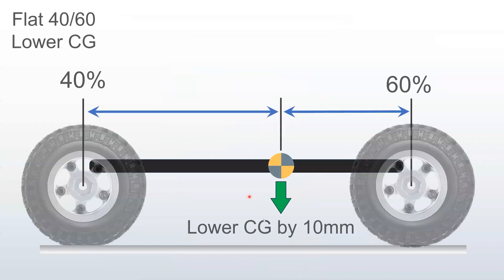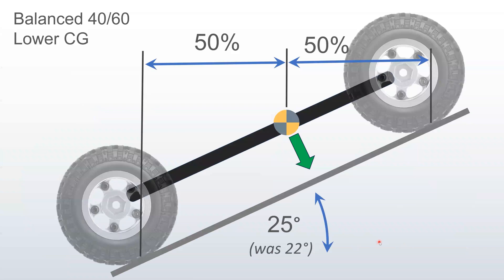What happens if you lower your center of gravity by, let's say, 10 millimeters? Still 60-40 front to rear, but a lower center of gravity by 10 millimeters. Well, that does give you a benefit, but it's a smaller benefit. It brings you to about 25 degrees slope, whereas before it was 22. So lowering the center of gravity also helps, but not as much as moving your weight forward.